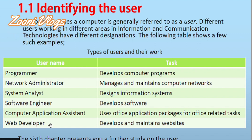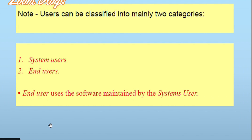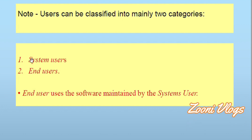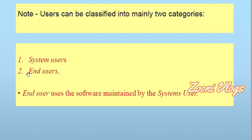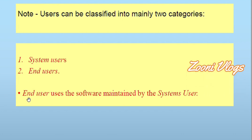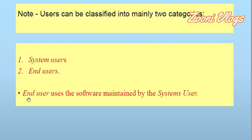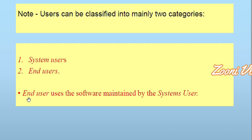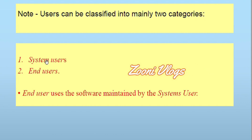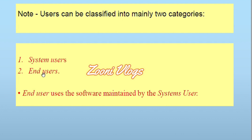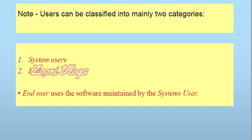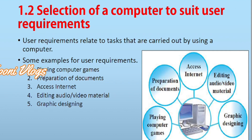Users can be classified into mainly two categories: system users and end users. End users use the software maintained by the system user. System users are the ones making the software, and end users — that's us — are the ones using that software. That is the meaning of the distinction between system users and end users.